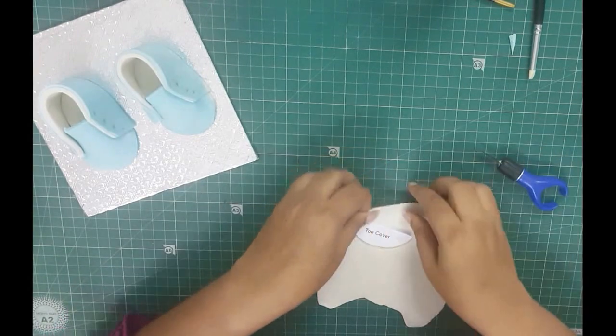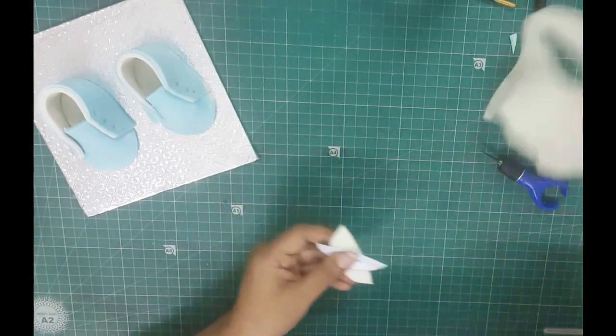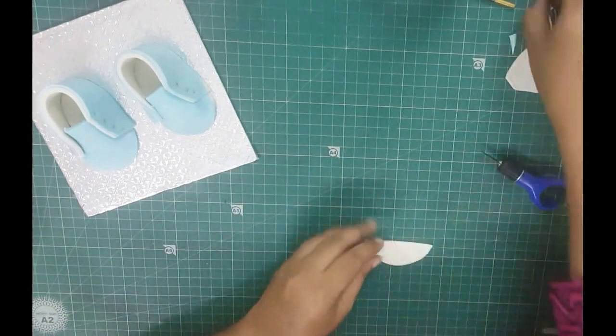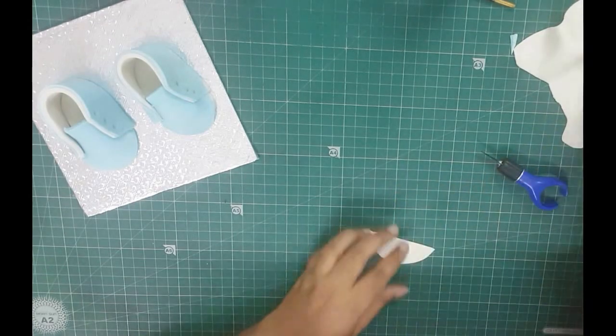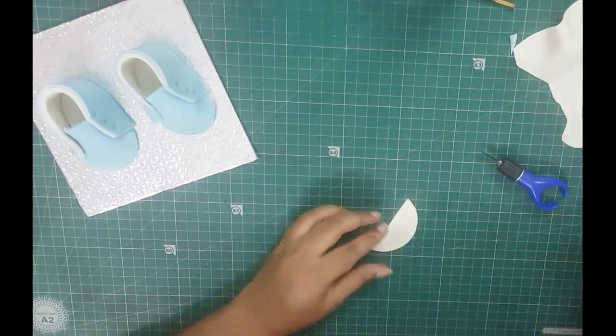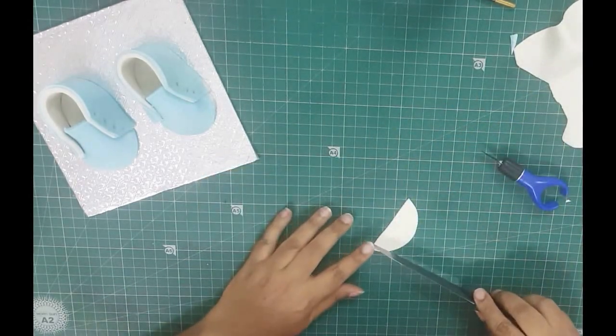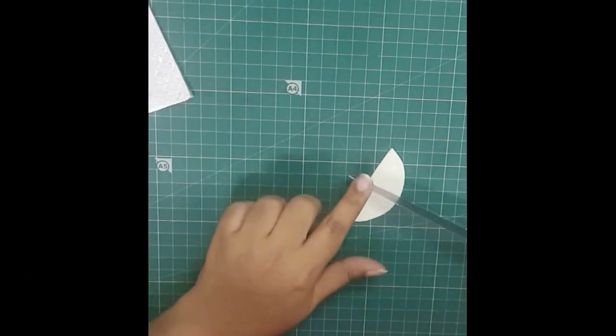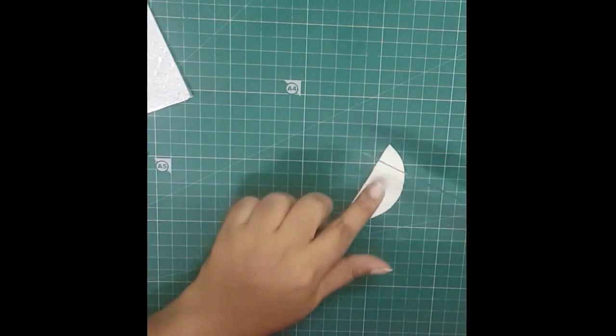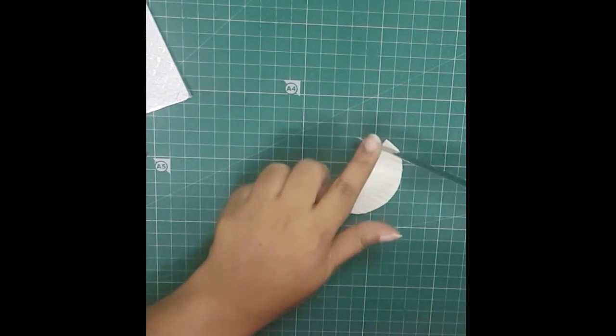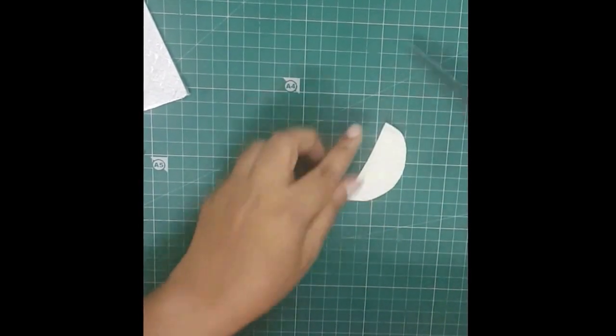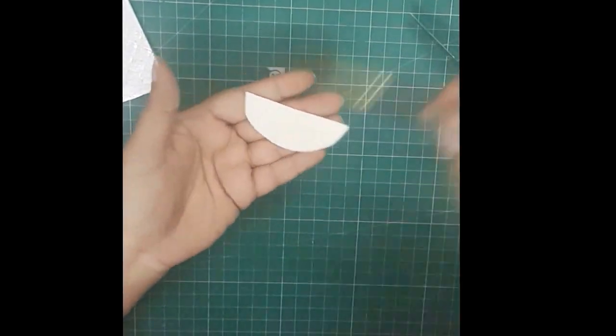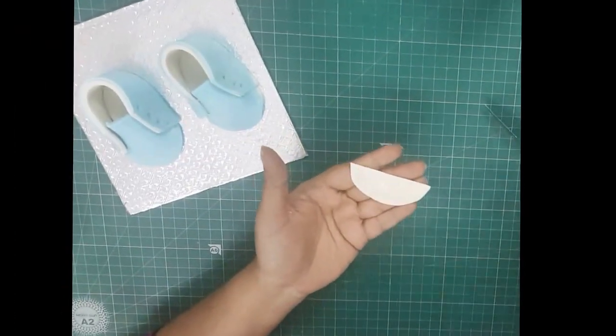Next, cut out the front flap in white. Again, make sure the edges are smooth. Mark out lines like this with the back of your knife and stick it onto the front of the shoe.